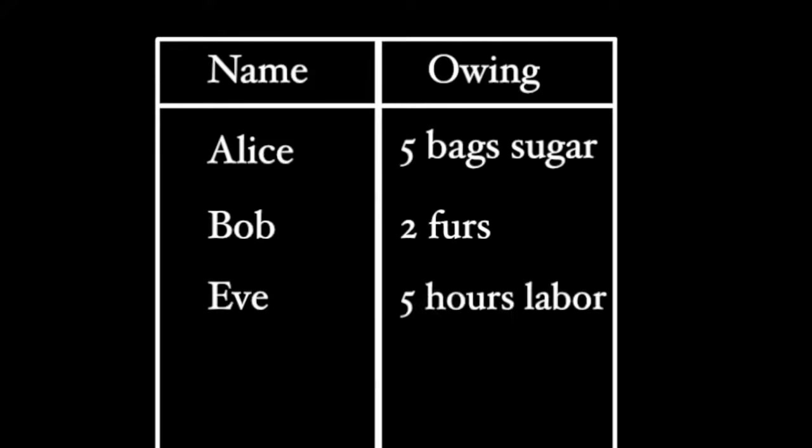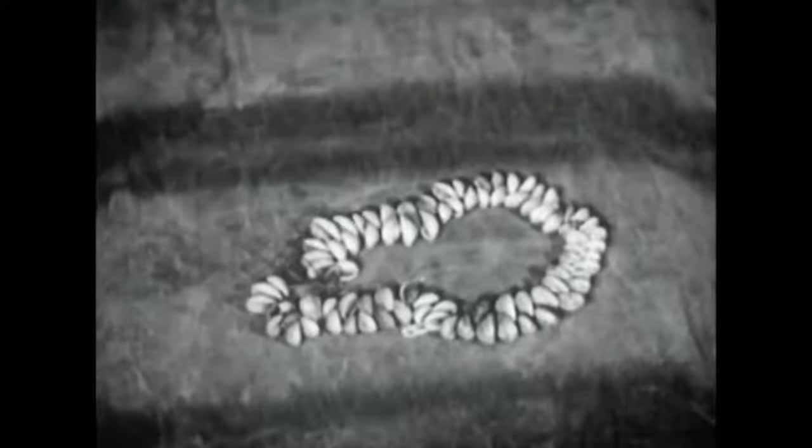This is what we call digital money, money which takes the form of written symbols or digits. But this kind of written money only works if we trust the people we are making promises with. And so when humans traveled to distant regions to trade with people they've never met and may never meet again, they used physical money instead. This allowed them to settle trades immediately with no trust involved. And of all the kinds of physical money we've used throughout history, there is one pattern which emerges.